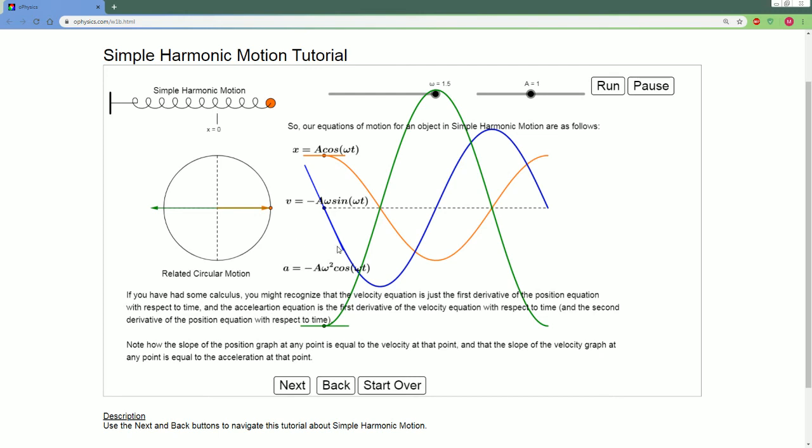Notice if you know some calculus here, you could see that the position, velocity, and the acceleration are all related by the first derivative. So, the slope of the position at any point is equal to the velocity at that position. And the slope of the velocity graph at any point is equal to that acceleration at that point. These are all shifts from each other. So, if you scoot the green one to the left by 90 degrees, you get velocity. And if you scoot velocity a little bit more, 90 degrees, you get the acceleration. Let's run it.